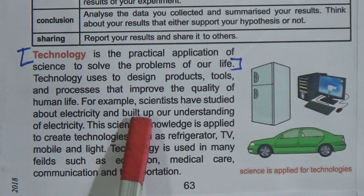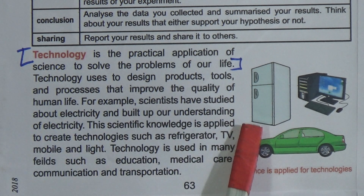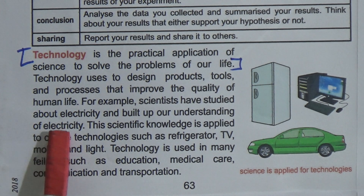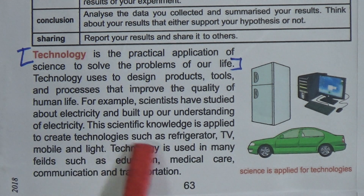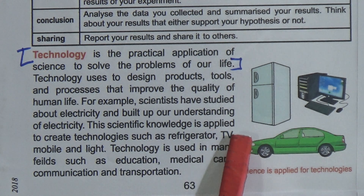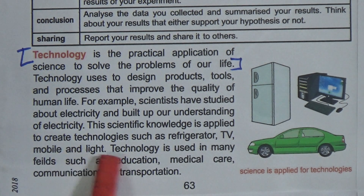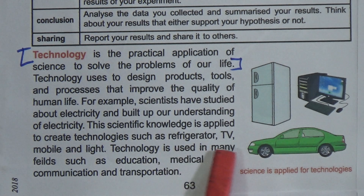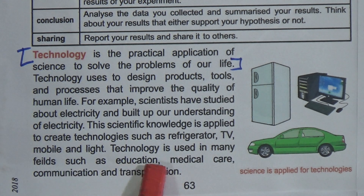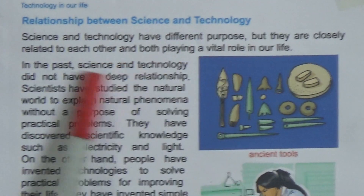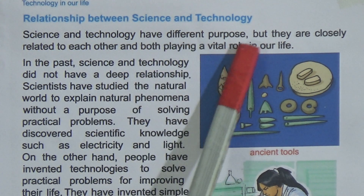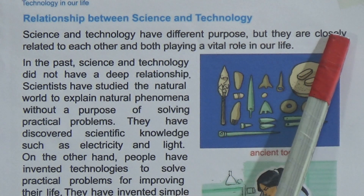For example, scientists have studied electricity and built up our understanding of electricity; the scientific knowledge is applied to create technology such as refrigerators, TVs, mobiles, and lights. Technology is used in many fields such as education, medical care, communication, and transportation. Science and technology have different purposes, but they are closely related to each other.